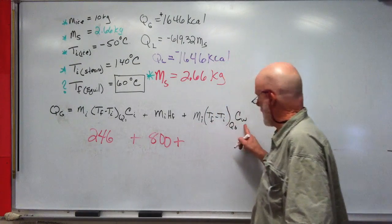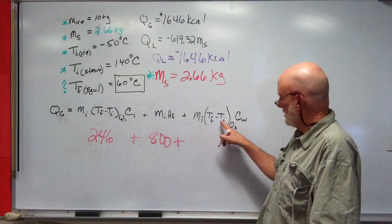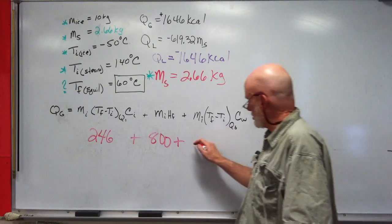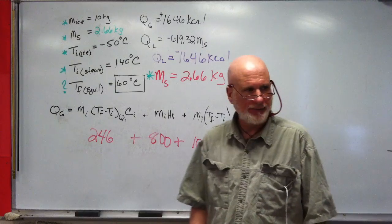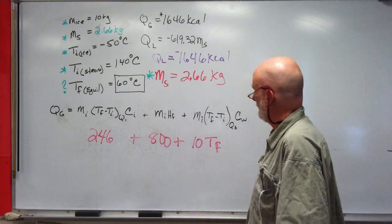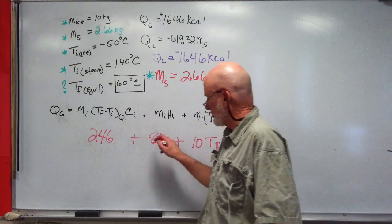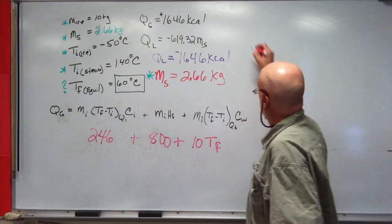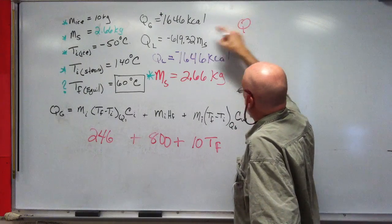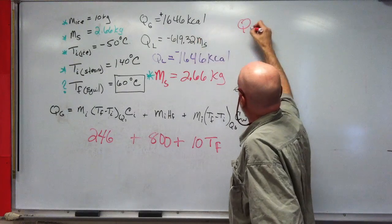246 plus 10 times 1, right? That's 10 times TF, which is 10 TF. That's zero, so this reduces to 10 TF. You combine these two, so that's 1046 plus 10 TF.